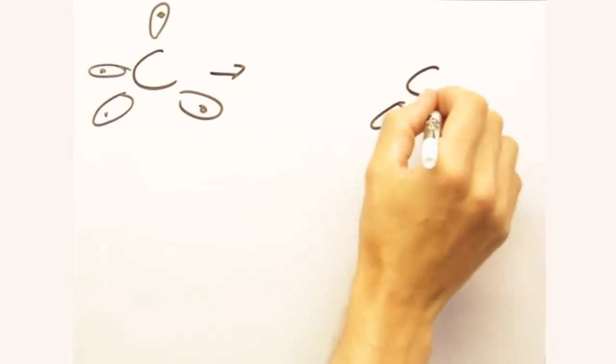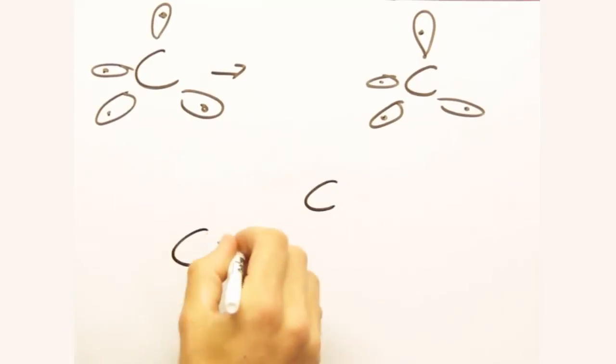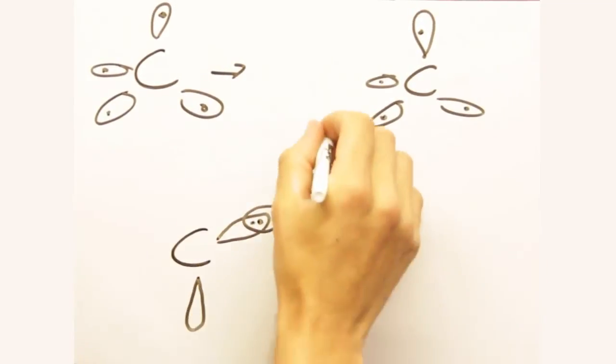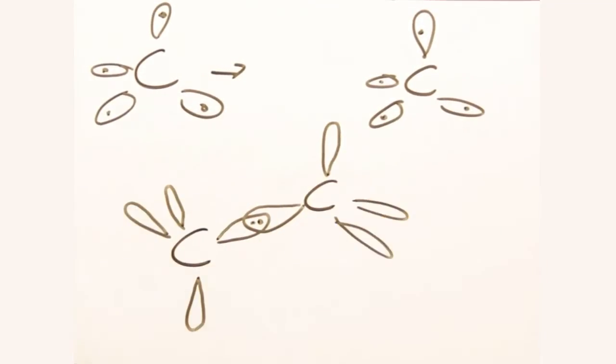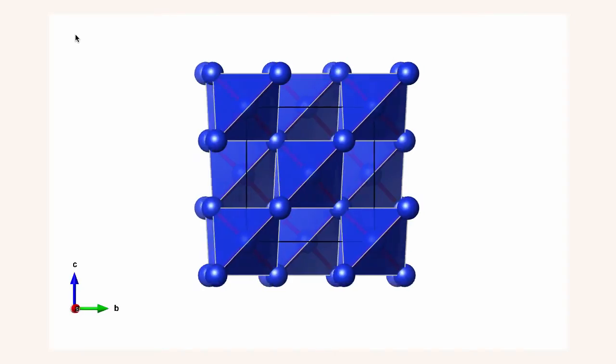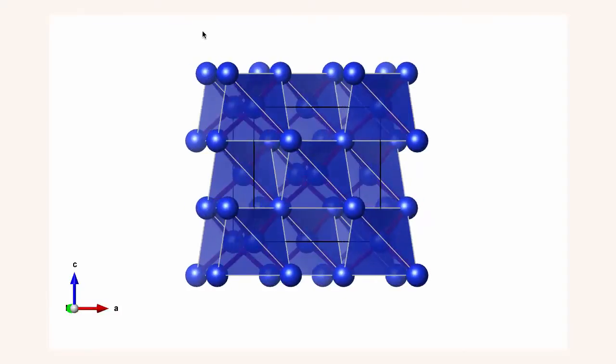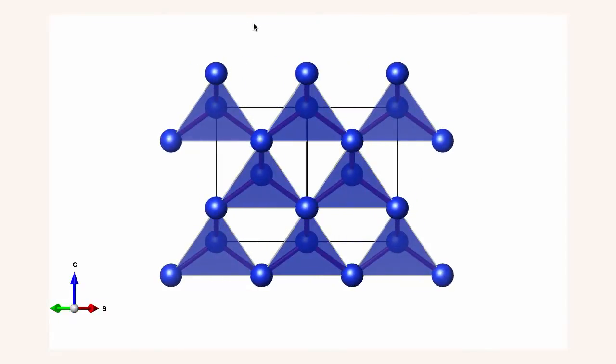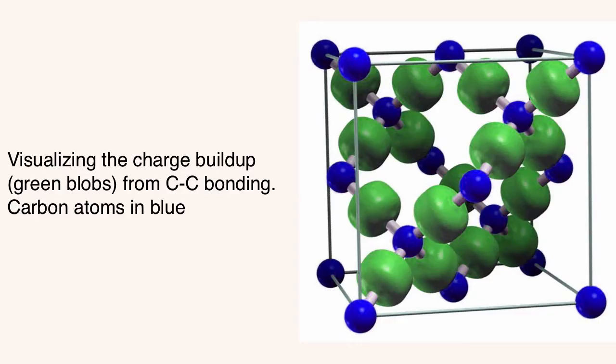So as we bring two carbon atoms close together, these two lobes will align, and that's where we'll see our covalent bond. Absolutely. And from this, we can see how this diamond structure is generated. And again, here's the resulting tetrahedra. We can also use more advanced techniques to visualize this charged pileup due to covalent bonding.